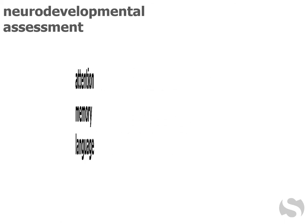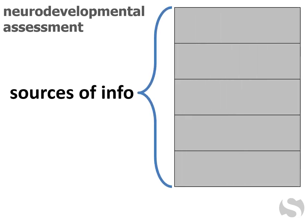Determining how well these abilities function requires considering several kinds of information. Background info includes medical and developmental history, such as early motor and language milestones. Another angle on background is what's currently happening with school.